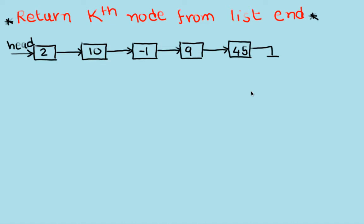Hello viewers, welcome. In this video we will look at one of the popular interview programming questions: return the kth node from the end of the list. You will be given a singly linked list and you need to find out the kth node from the end. For example, given a linked list like the one shown here, if you need to find the second node from the end, in this case the second node would be this one.